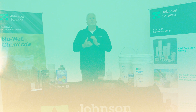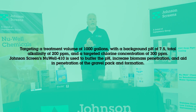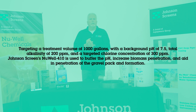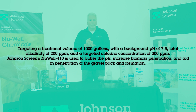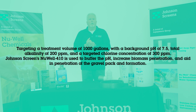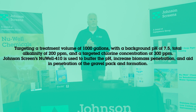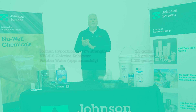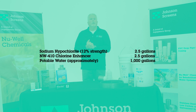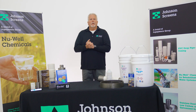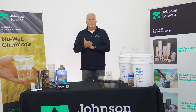Here is a sample calculation using 12% chlorine: targeting a treatment volume of 1,000 gallons, with a background pH of 7.5, total alkalinity of 200 ppm, and a targeted chlorine concentration of 300 ppm. Johnson Screens' New Well 410 is used to buffer the pH, increase biomass penetration, and aid penetration of the gravel pack and formation. The chemicals used would be: sodium hypochlorite 12% solution — 2.5 gallons; New Well 410 chlorine enhancer — 2.5 gallons; and approximately 1,000 gallons of potable water.